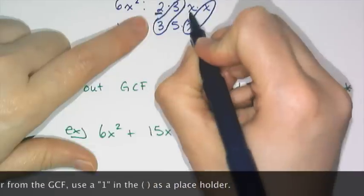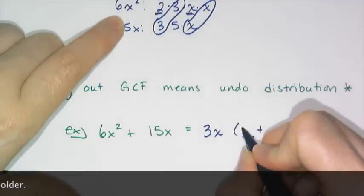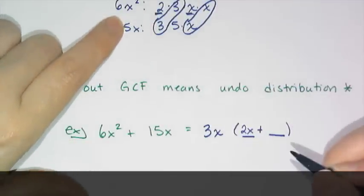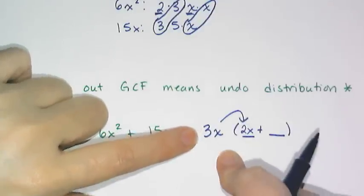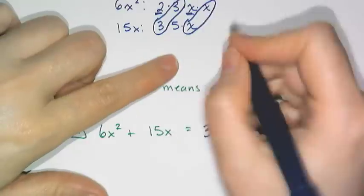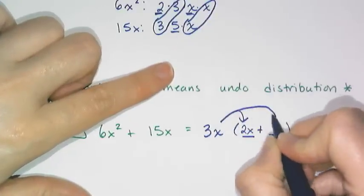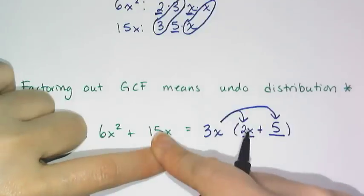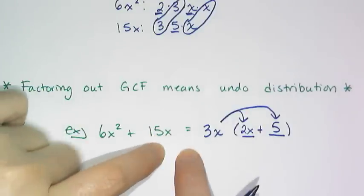So I have a 2 and an x left over from 6x². That means this is 2x, and if you think about it, 3x times 2x is 6x². And then from the second term, I'm left with a 5, so it's plus 5. And once again, 3x times 5 is 15x. So what I've just done is I've undone distribution.